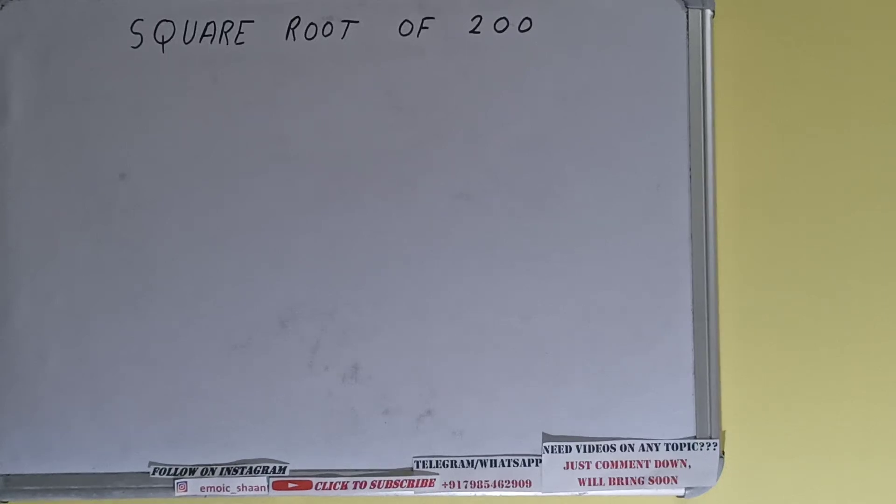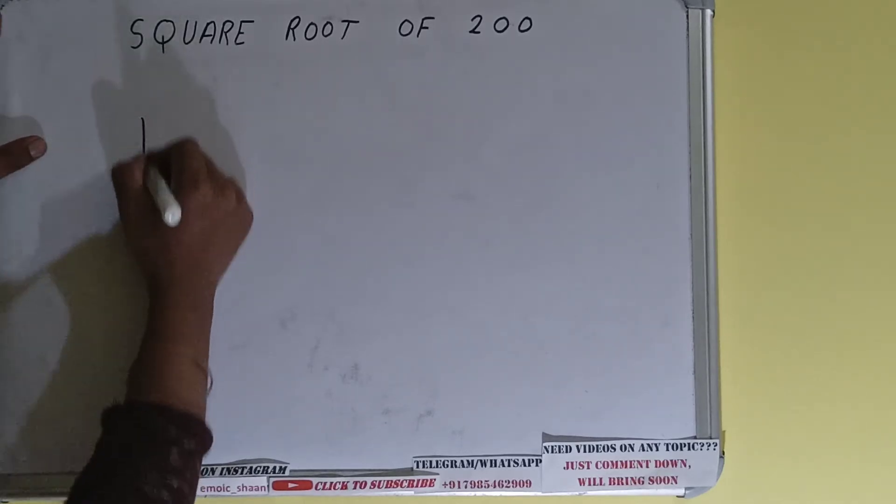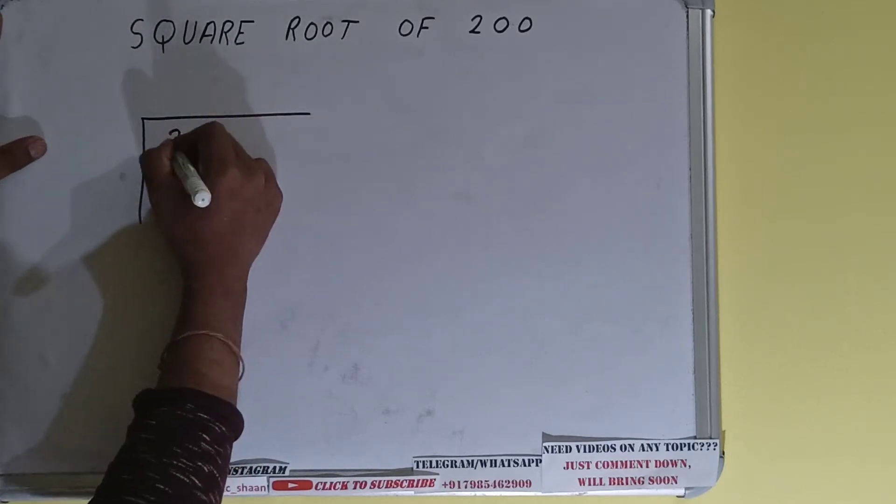Hello friends, in this video I will be helping you with the square root of the number 200. Let's start. We'll be using the division method for finding out the square root of 200. First we need to write the number like this.